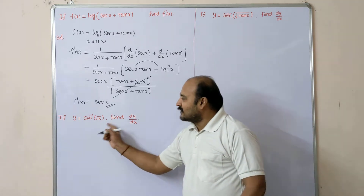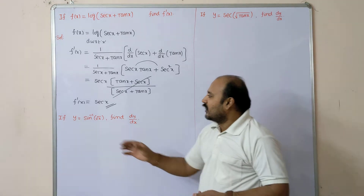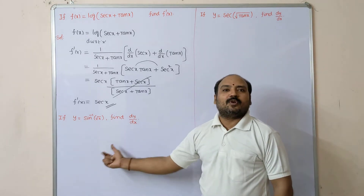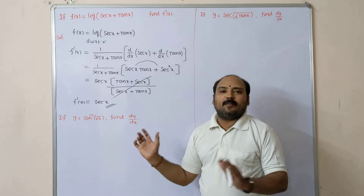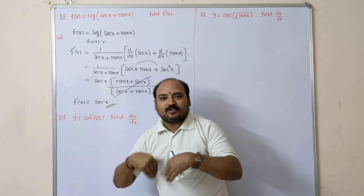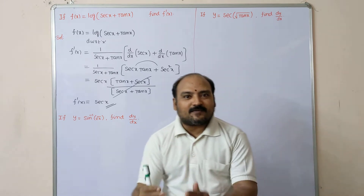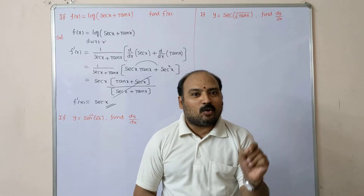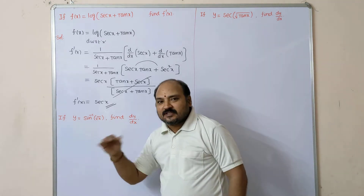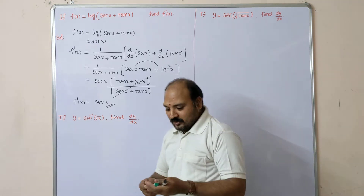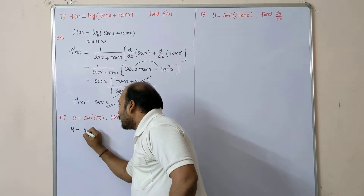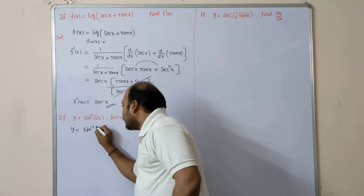Now come to the second question: if y = sin⁻¹(√x), find dy/dx. For sin⁻¹, treat the entire argument as x. d/dx of sin⁻¹(x) = 1/√(1 − x²). So first, y = sin⁻¹(√x).